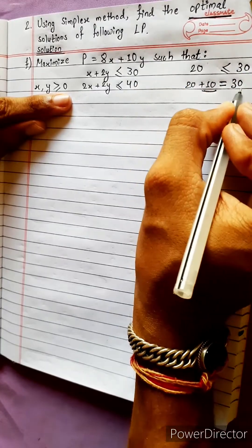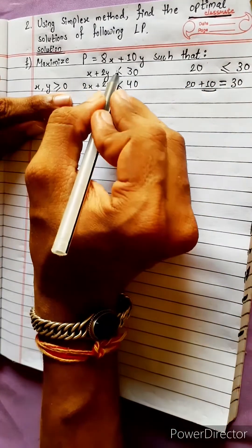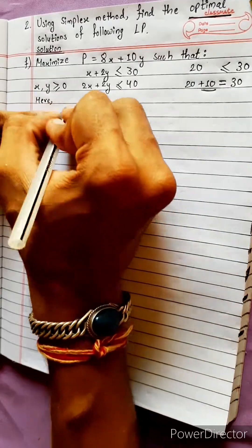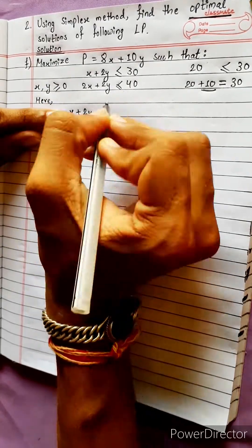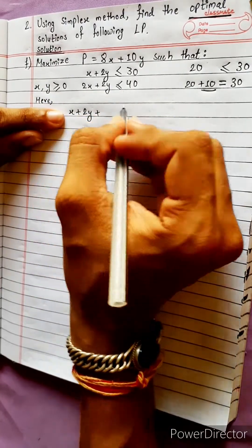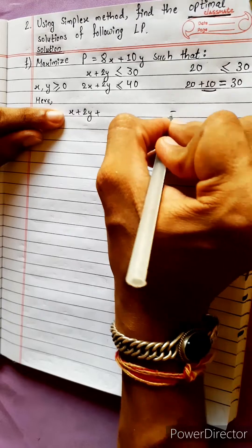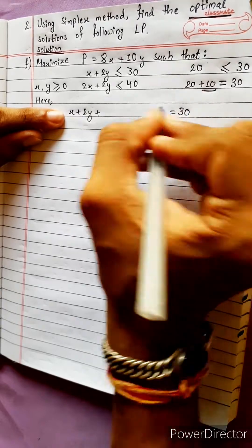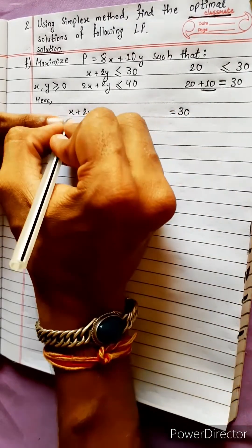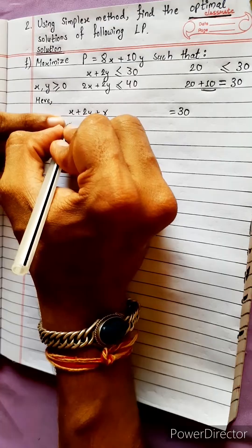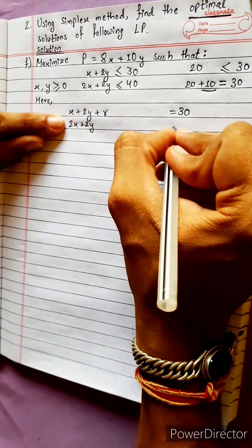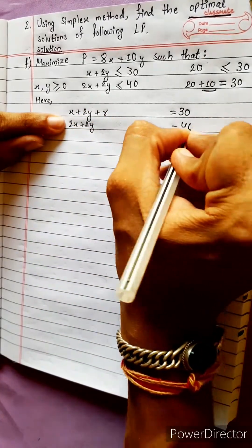x plus 2y plus K is less than or equal to 40. The constant state gives us 2x plus y equal to 40.